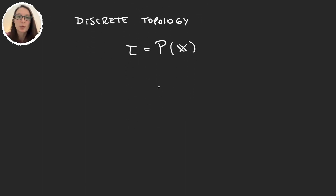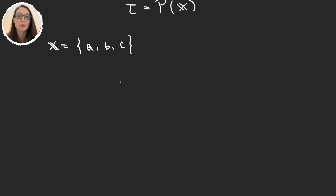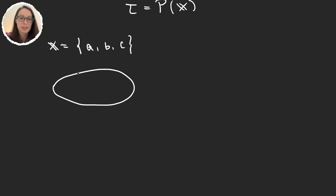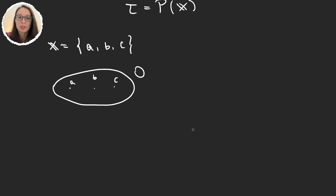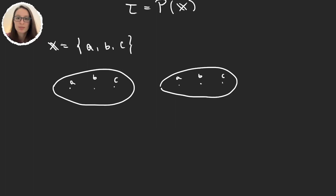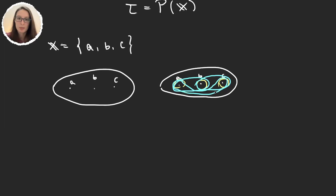Now let's see more complicated examples. Suppose our set X is {a, b, c} — just three elements. A great idea is to draw 'bags' to represent the topology visually. We can immediately have the trivial topology — just selecting the whole set and the empty set — and the discrete topology, which has a bag grabbing all sets, bags grabbing each element individually, and bags grabbing them two by two.